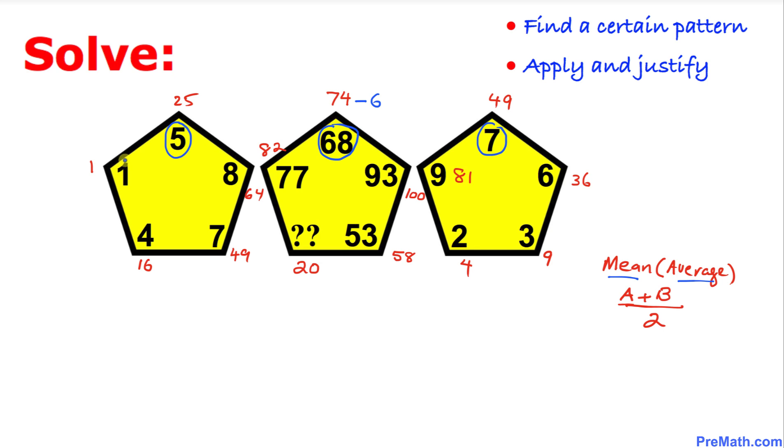Likewise we are going to find the mean of these numbers 1 and 9. 1 plus 9 is 10 divided by 2 is 5, and if we subtract 5 from this 82 that is going to give us 77.